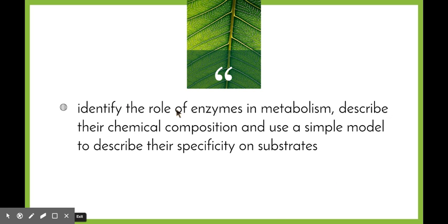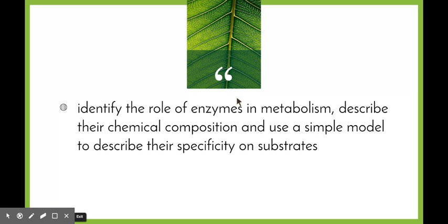The biggest reason why we need homeostasis is because of these chemicals called enzymes. So we're going to have a look at what enzymes are by looking at this dot point: identify the role of enzymes in metabolism, describe the chemical composition, and use a simple model to describe their specificity on substrates. It's only one dot point, but it's fairly heavy — we need to identify, describe, and use a model. So it is sort of a triple barrel dot point here.